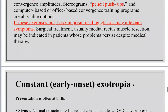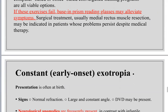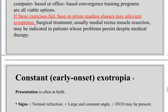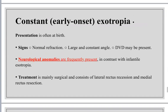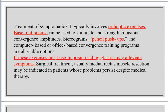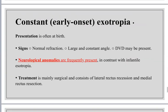If convergence exercises fail, use relieving prism (base-in prism). Reading glasses may alleviate symptoms. Surgical treatment — usually medial rectus resection — may be indicated in patients whose problem persists despite medical therapy.